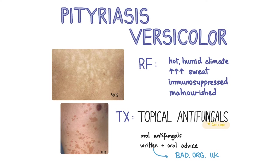Ketoconazole shampoo can be given for large areas. If topical antifungals are not effective, send scrapings off to confirm the diagnosis and consider starting oral antifungals like itraconazole. Patients should be given written and oral advice about the condition, including counselling that it can take several months for the skin colour to return to normal. Recurrence is also very common.